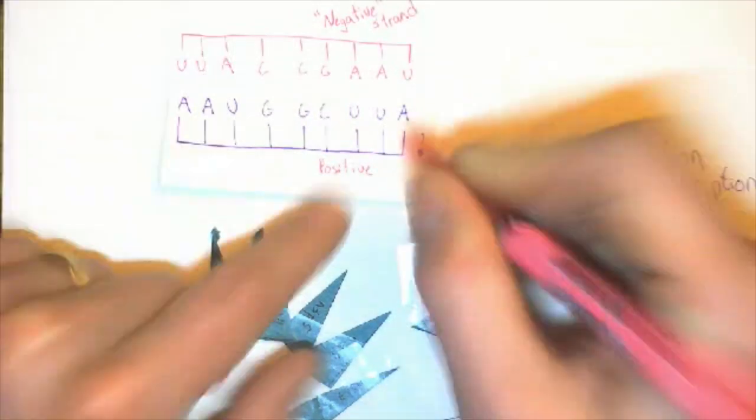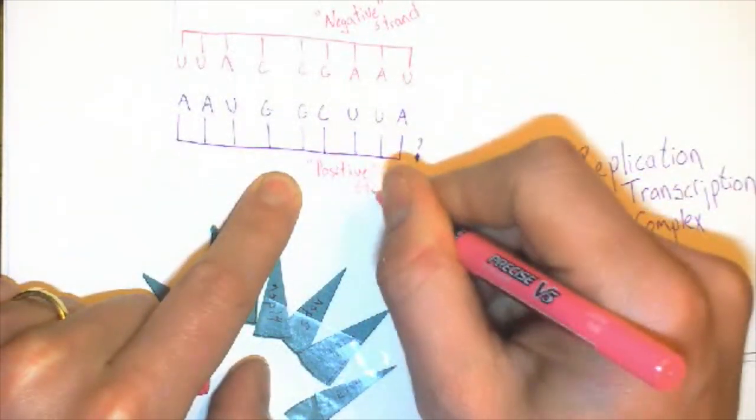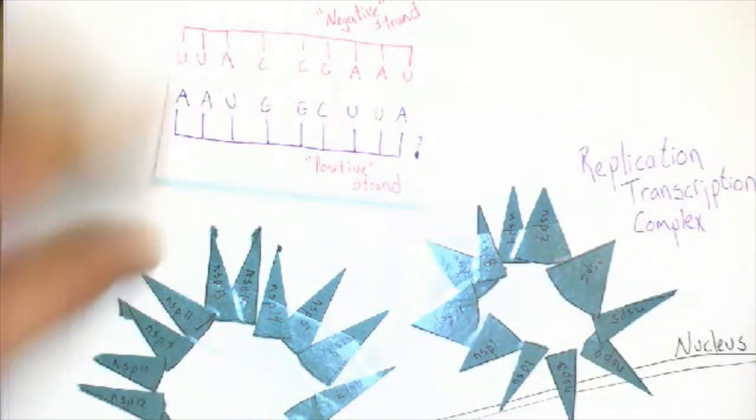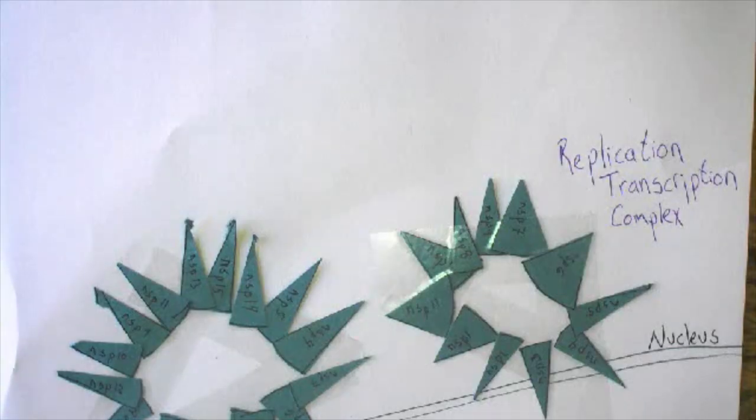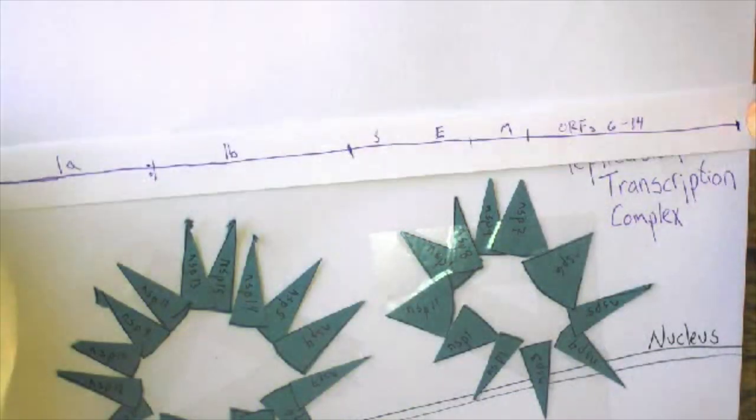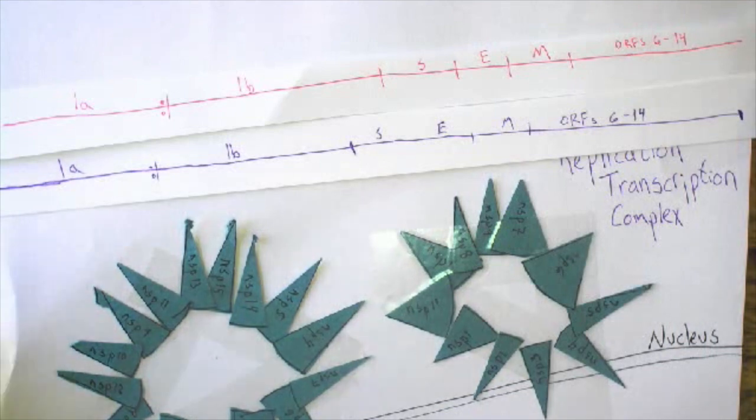In this case, the first complement is called the negative strand. Think of it kind of like negative film. The replication-transcription complex first produces a negative of the whole viral genome.